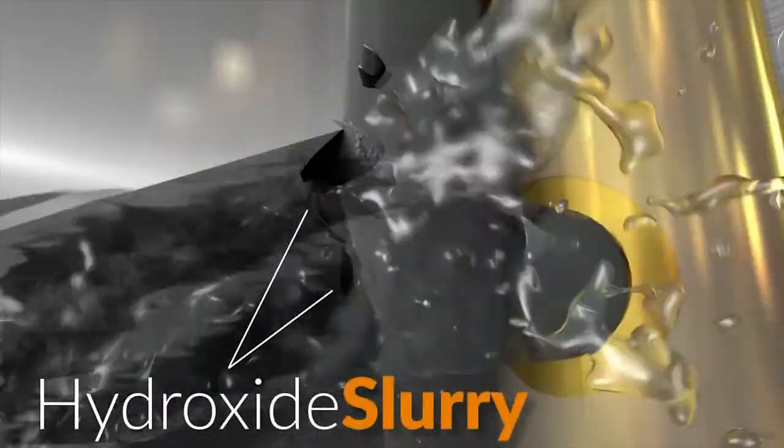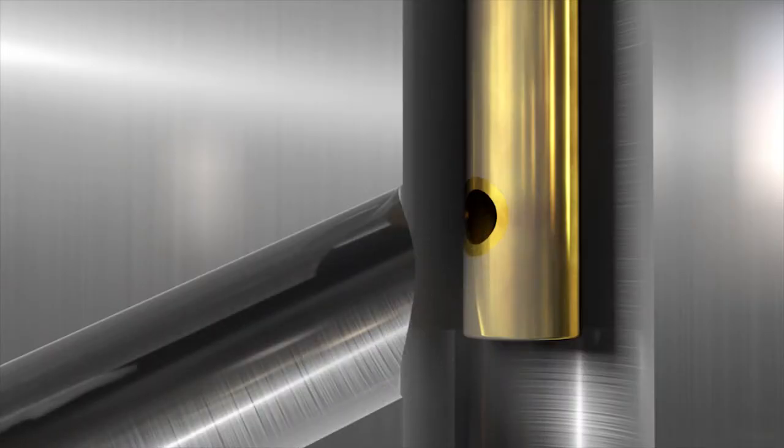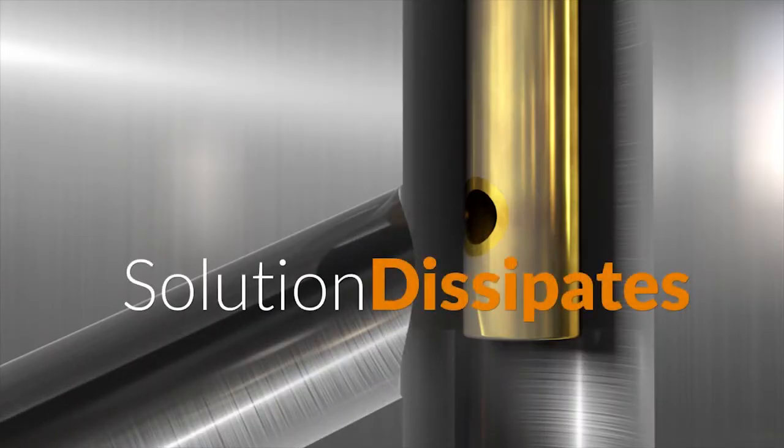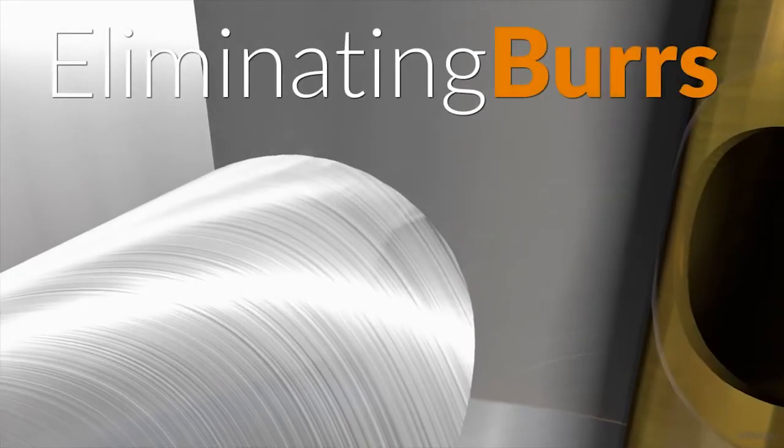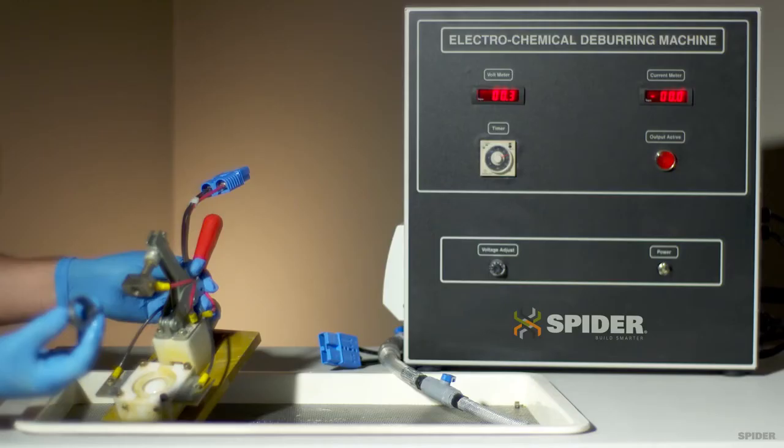The solid metal burr is broken down into a minor hydroxide slurry as a byproduct of the process. Once it chews away the burr, the electrolyte solution dissipates across the surface area, eliminating the burrs without leaving behind any dust, powder, or debris.